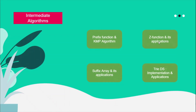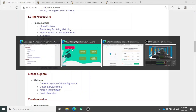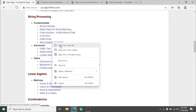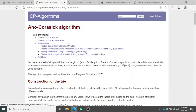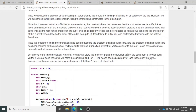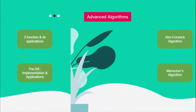After the prefix function, KMP algorithm, Z-function, and their applications, we'll move on to suffix arrays and their applications. One thing you won't find on cpalgorithms.com in the string algorithm series is tries. Tries are needed for the implementation of certain things like suffix automaton. We'll be learning tries separately first — its knowledge, implementation, and application — before using tries for other things. These are your intermediate level algorithms.